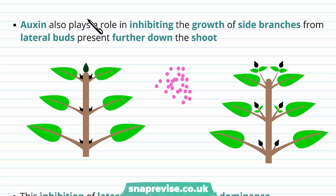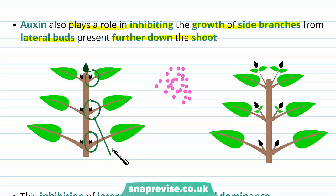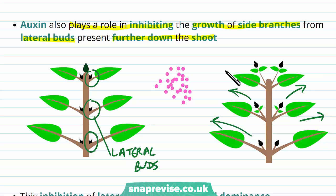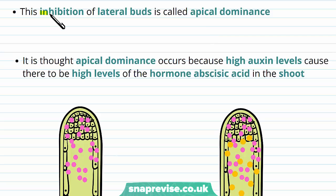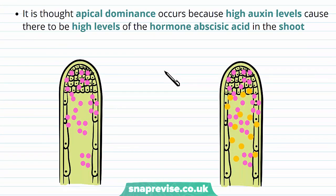Auxin has other roles as well. It plays a role in inhibiting the growth of side branches from the lateral buds coming off of the stem, which are present further down the shoot. These lateral buds are aiming to grow outwards and extend the plant in different directions. However, when auxins are present they inhibit the growth of these lateral buds, so there is less growth further down the shoot. We call this inhibition of the lateral buds apical dominance, because the apex of the plant is more dominant in its growth.